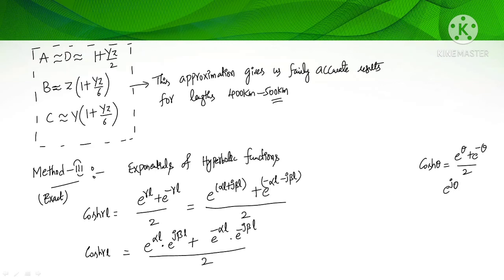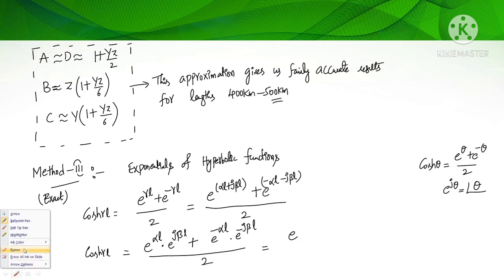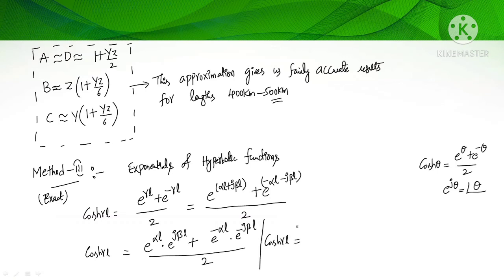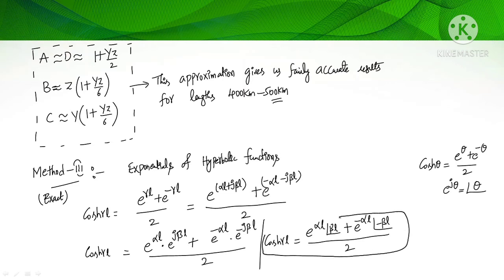Since e^(jθ) = cos(θ) + j·sin(θ), which equals ∠θ in phasor notation, e^(jβl) = ∠βl. Therefore, cosh(γl) = (e^(αl)∠βl + e^(-αl)∠-βl)/2. This is the value of cosh(γl), which equals A and D. Since this is an exact method, we can use it without any problem.